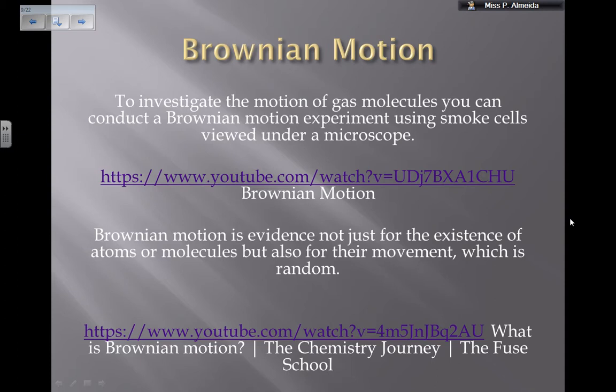One video shows the experiment and what you would see, and the other has an animation explaining Brownian motion, so check those out. If you want to investigate the motion of gas molecules, you can conduct a Brownian motion experiment using smoke cells viewed under a microscope. Brownian motion is real evidence not just for the existence of atoms and molecules, but also for their random movement. That's all for today — see you in the next video!